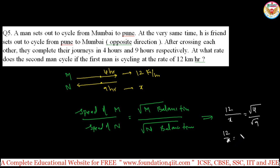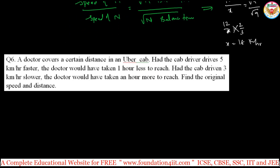From 12/x = 2/3, cross-multiplying gives x = 18 kilometers per hour. So the second person is cycling at 18 kilometers per hour. One is going at 12 km/h, the other at 18 km/h, and after crossing, the balance times are 4 hours and 9 hours. You can apply this formula for this type of problem.